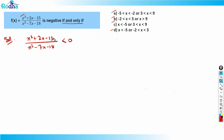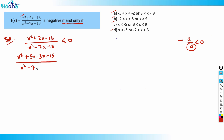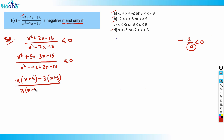If a/b is less than zero, it's negative. The thing is I don't know whether the denominator is positive or negative. So I'll solve both quadratics. For the numerator x squared plus 2x minus 15, that factors as x plus 5 and x minus 3. For the denominator x squared minus 7x minus 18, splitting as minus 9x plus 2x minus 18, that factors as x minus 9 and x plus 2. So we get: x minus 3 times x plus 5, divided by x plus 2 times x minus 9, less than zero.